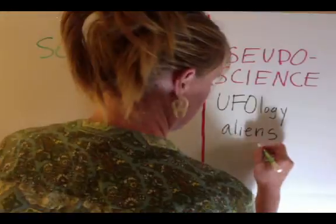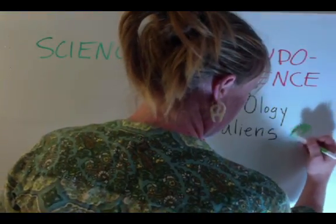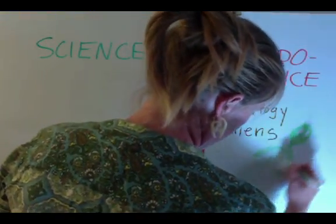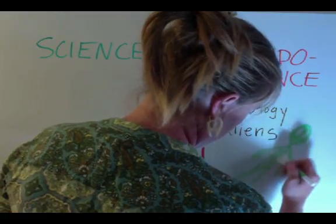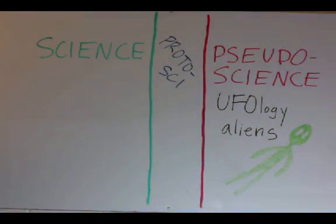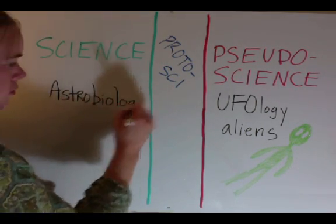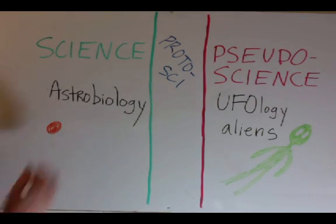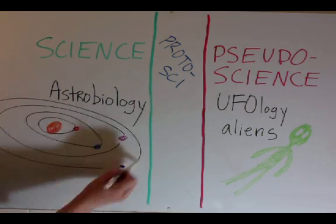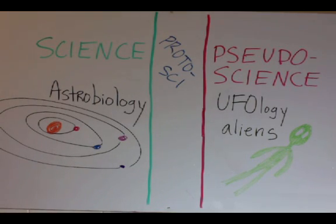Ufology and the idea that there are aliens and we have been abducted by them is a pseudoscience. However astrobiology which looks at the origin of life and the possibility of life on other planets is a real science. So far we have not found any extraterrestrial life.